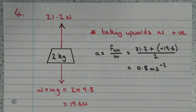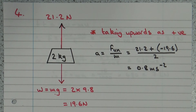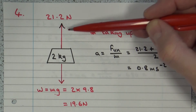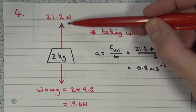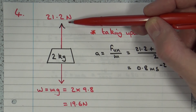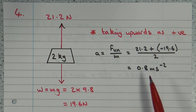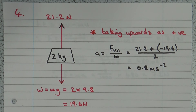That means the lift could be accelerating upwards at 0.8 ms⁻². It could also be decelerating downwards — if it's moving downwards and we have an unbalanced force in the upward direction, that would cause it to decelerate. So it could be accelerating upwards at 0.8 ms⁻², or decelerating downwards.